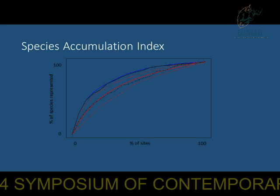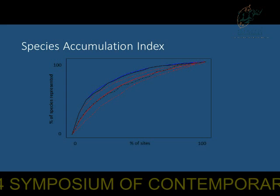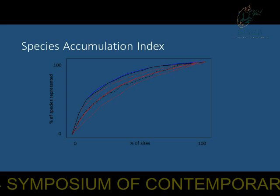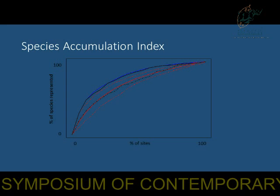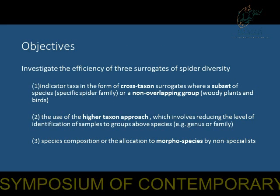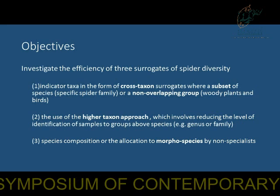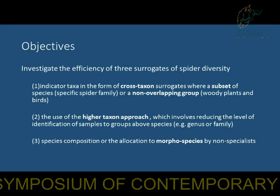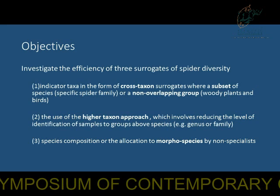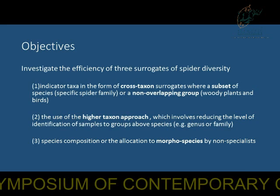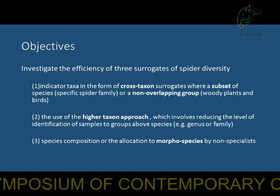A surrogate that performs just as well as randomly selecting sites is indicated by a stippled dark line, while a solid black line close to the optimal curve indicates a really good surrogate. I've looked at indicated taxa in the form of cross-taxon surrogates, specifically woody vegetation and birds, because that's typically what people use for conservation planning. I've also focused on genera and families within spiders to see how they can act as a surrogate.